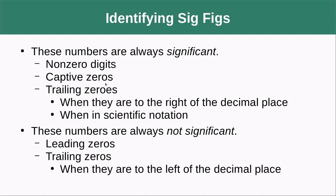Any captive zeros, so those are zeros that are in between two non-zero digits. Any trailing zeros, so the zeros we write at the ends of numbers when they are to the right of the decimal place and when in scientific notation. These numbers are always not significant: leading zeros, so zeros at the beginning of a number, and trailing zeros when they're to the left of the decimal place. So we're going to look at some examples here.